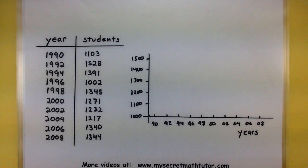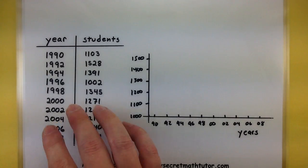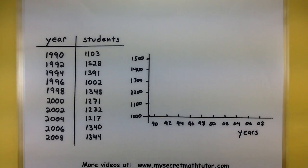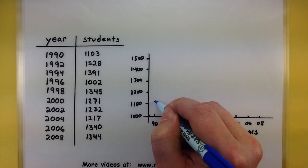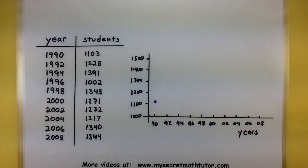Alright, so the very first part of this is to take these data points and put them on our chart. Then we'll go ahead and connect them with nice line segments to see how the data is changing. So starting with the first one, here's our 1990. We need to put a spot at 1103, which is just a hair above 1100. So that looks like a good spot.